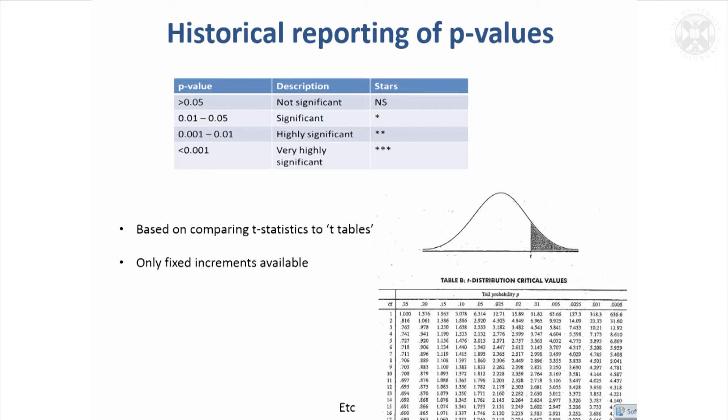It's just to mention that historically, when people didn't have packages, they would have to do their tests by hand, and then they would have to look up and get their p-values by looking at their test statistic in a relevant table for their distribution. Here the null distribution is the t-distribution. They would get an approximate p-value from this table, and they would usually just summarize it as...